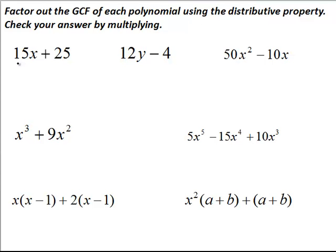Looking at the first expression here, we have 15x plus 25. We notice that 5 is a factor of both 15 and 25. We cannot pull out any x's since there is only one x present in the first term, and there are no x's present in the second term.